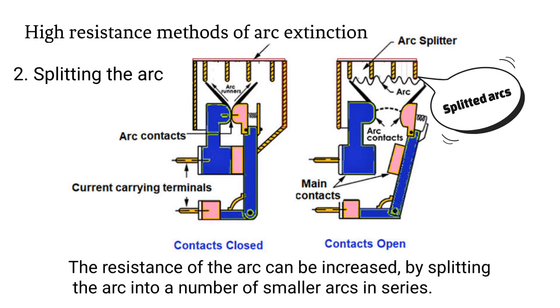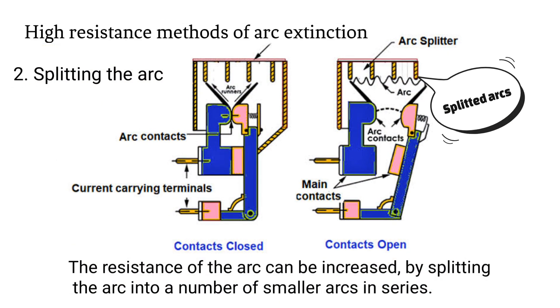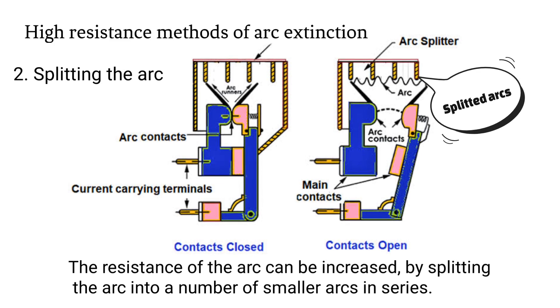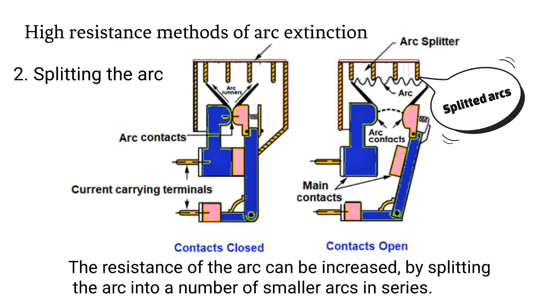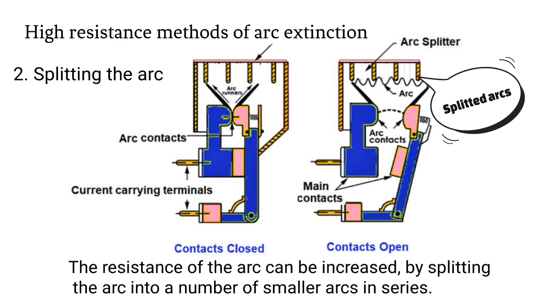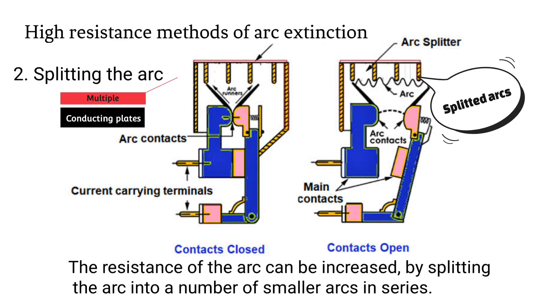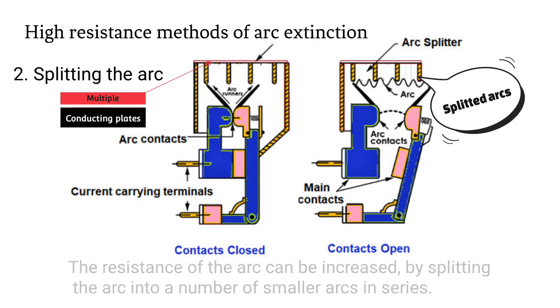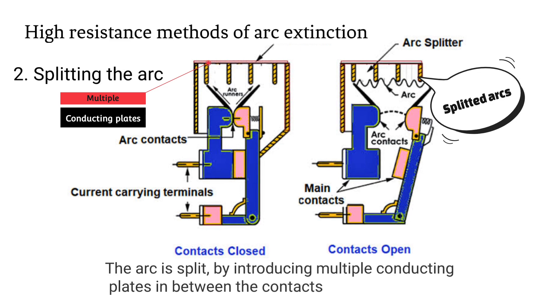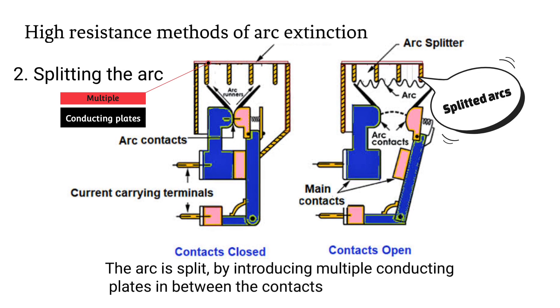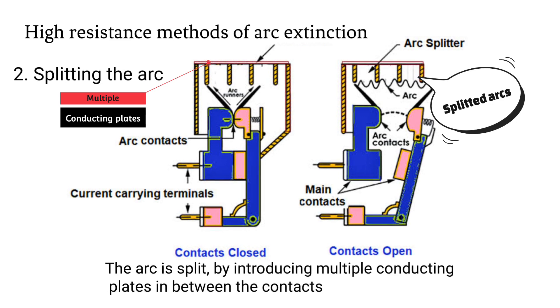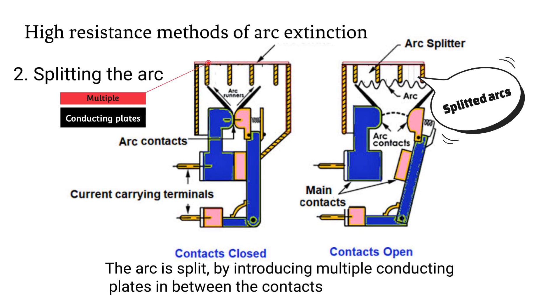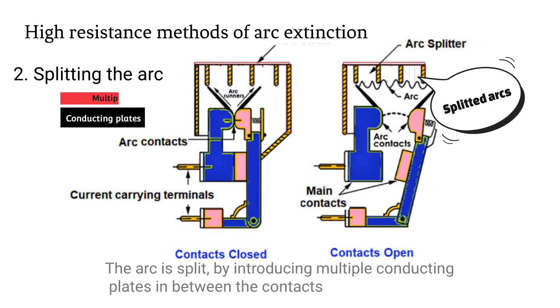Splitting the arc. The resistance of the arc can be increased by splitting the arc into a number of smaller arcs in series. The arc is split by introducing multiple conducting plates in between the contacts.